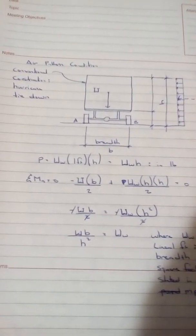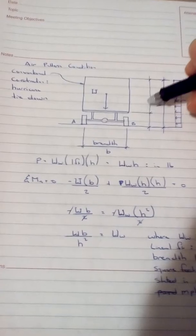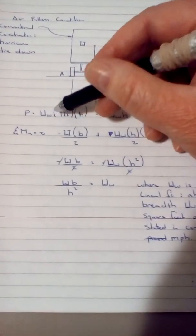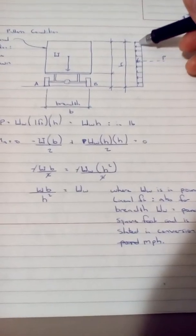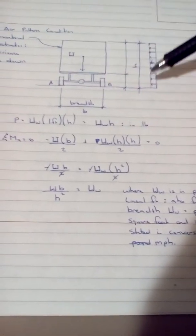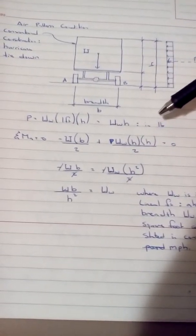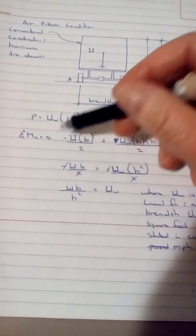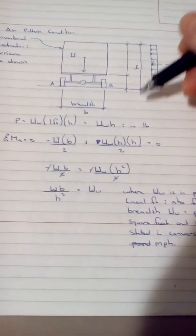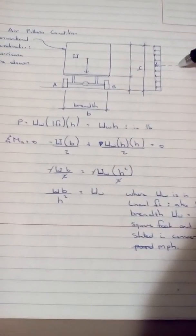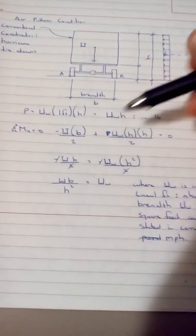We have H as the wheel height, the superstructure, and the breadth B. P equals W_sub_w times one foot times H. Here's P and the uniform load for the one-foot strip length. We sum moments around point A equal to zero: minus W times B over 2, plus W_sub_w times H times (H over 2), equal to zero. Some terms cancel out.